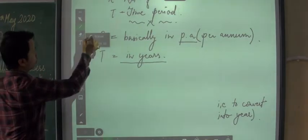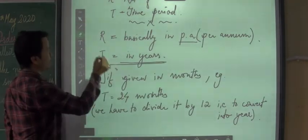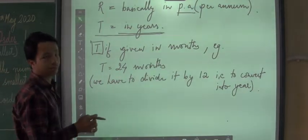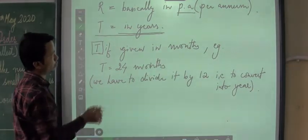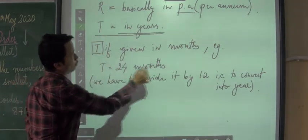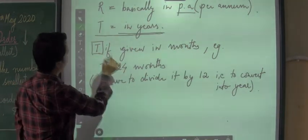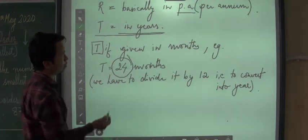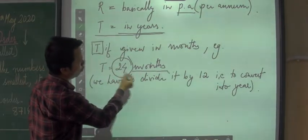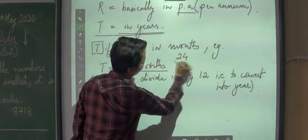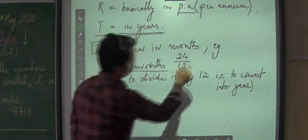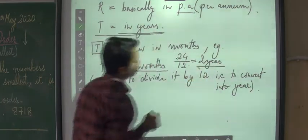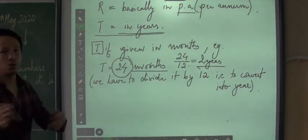The time period is usually given in years. If the time period is not given in years but is given in months, we need to change it into years. For example, if the time period is given as 24 months, we divide by 12, so it becomes 2 years. Always try to change whatever time period is given into years by dividing by 12.